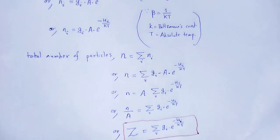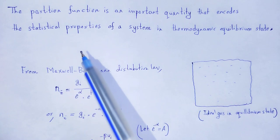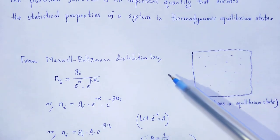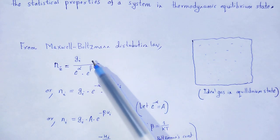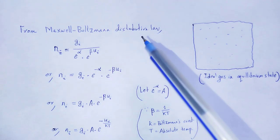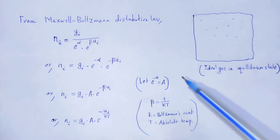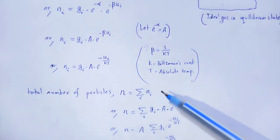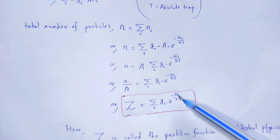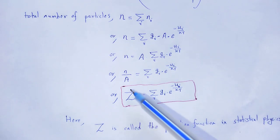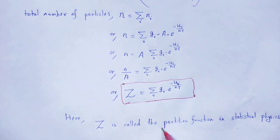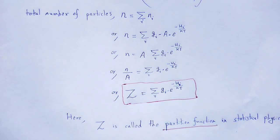With the help of this video lecture, we understand the concept of partition function — what the importance of partition function is. We define the partition function by using Maxwell-Boltzmann energy distribution law, taking ideal gas in equilibrium state. From that expression, we define a function Z = summation over i of G_i × e to the power minus U_i divided by KT. That Z is called the partition function in statistical physics. With this useful and important note, let me wind up the session. Thank you.